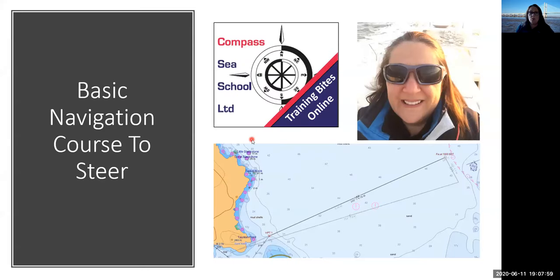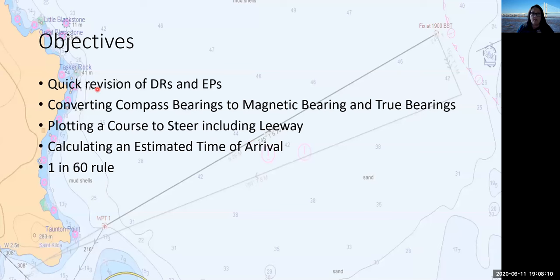Tonight's session covers basic navigation — specifically basic course to steer. This builds on the previous session on estimated positions done Tuesday night. We'll do a quick revision of DRs and EPs, how to convert compass bearings to magnetic and true bearings, how to plot a course to steer including leeway, calculating an estimated time of arrival, and we'll also look at the one-in-60 rule. I'll use slides and the RYA chart plotter.